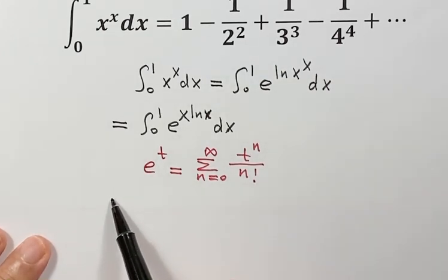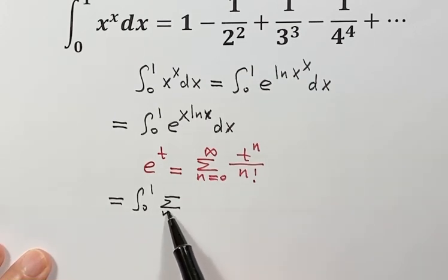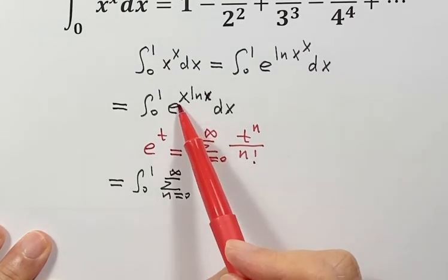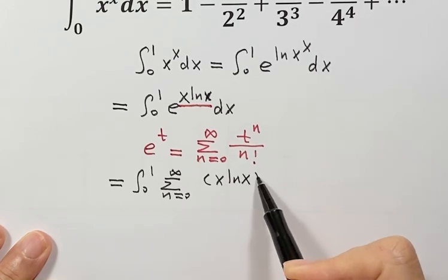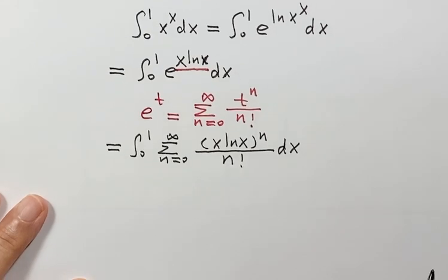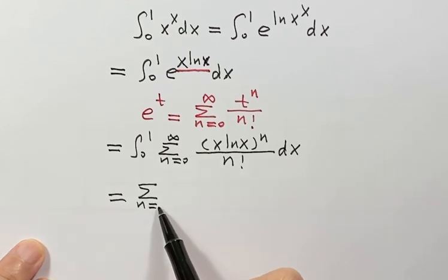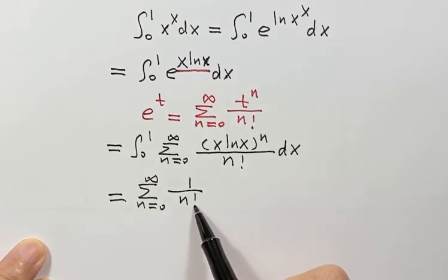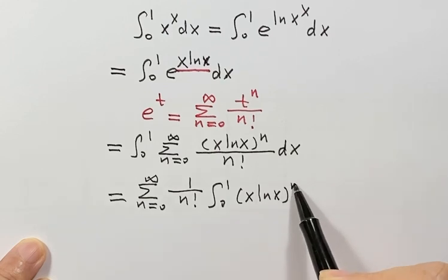Let's continue. Here we have from 0 to 1, then the sum. So what is t? For our case, t is x natural log x. So here we have x natural log x to the power n, divided by n factorial, then dx.